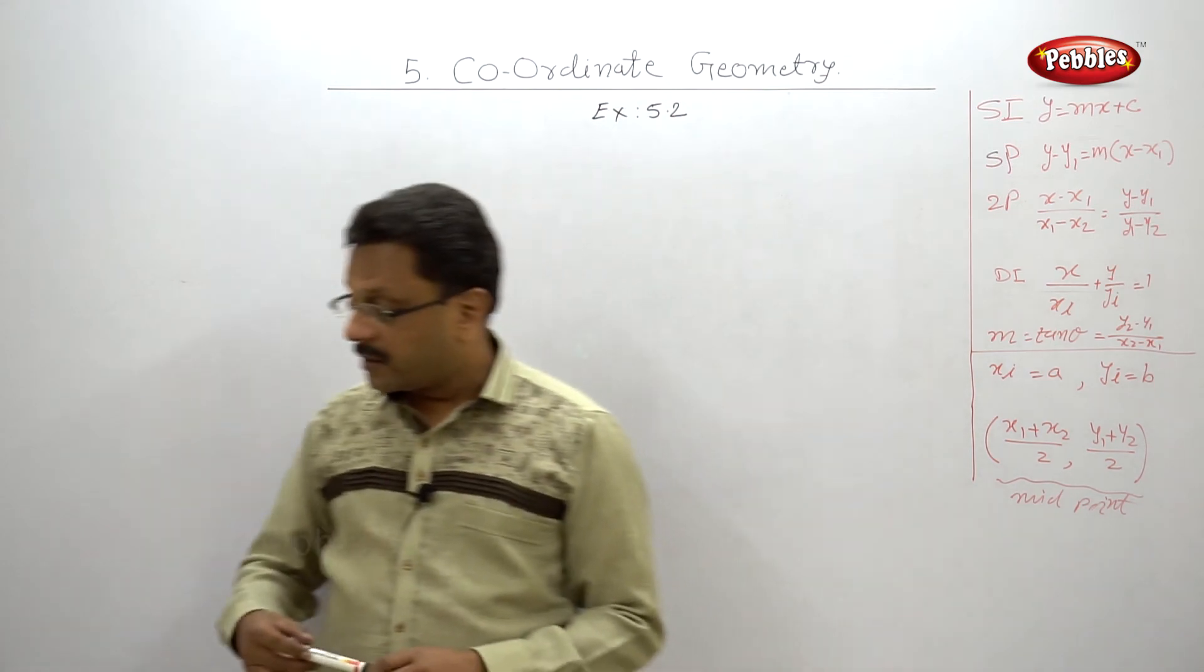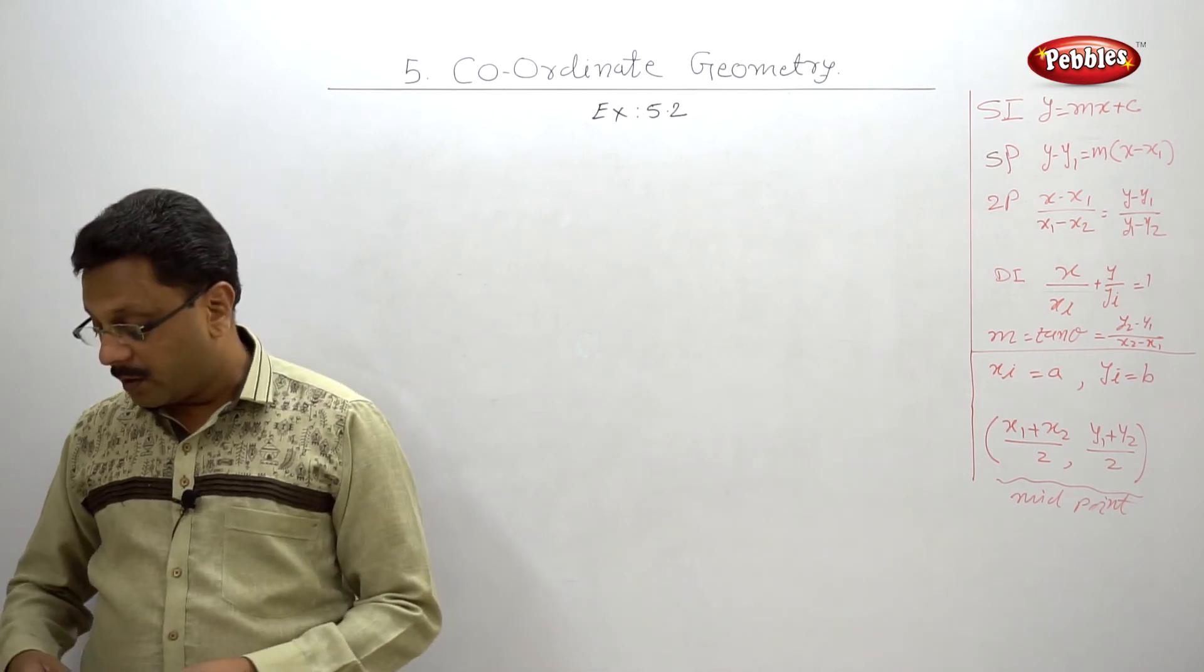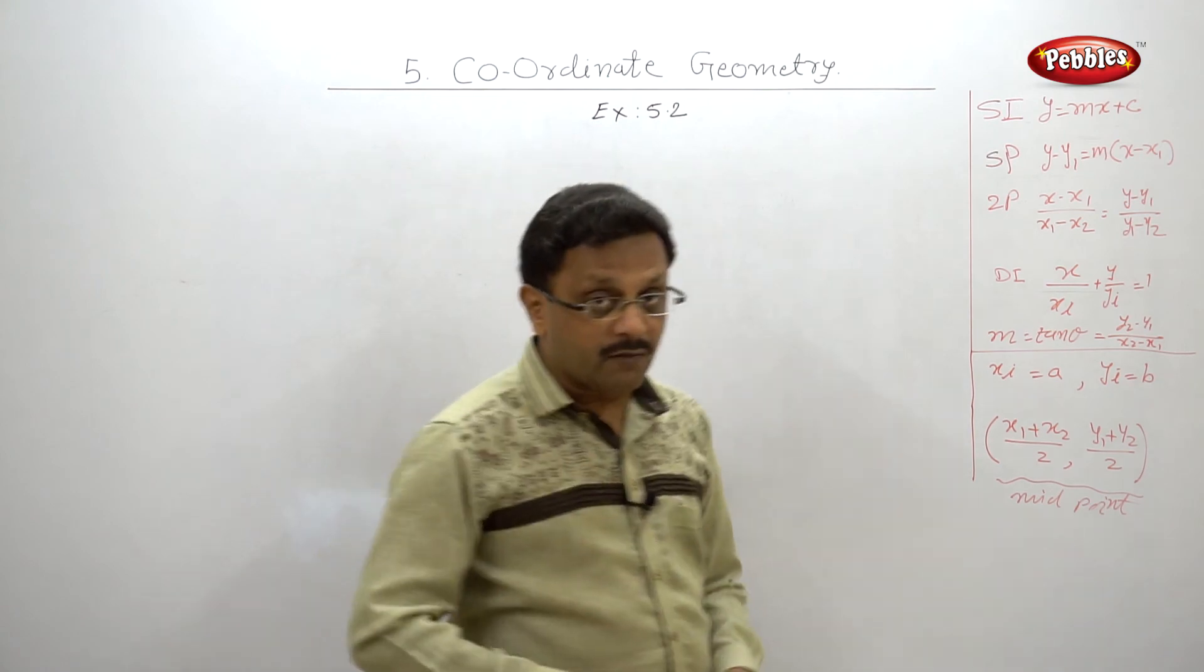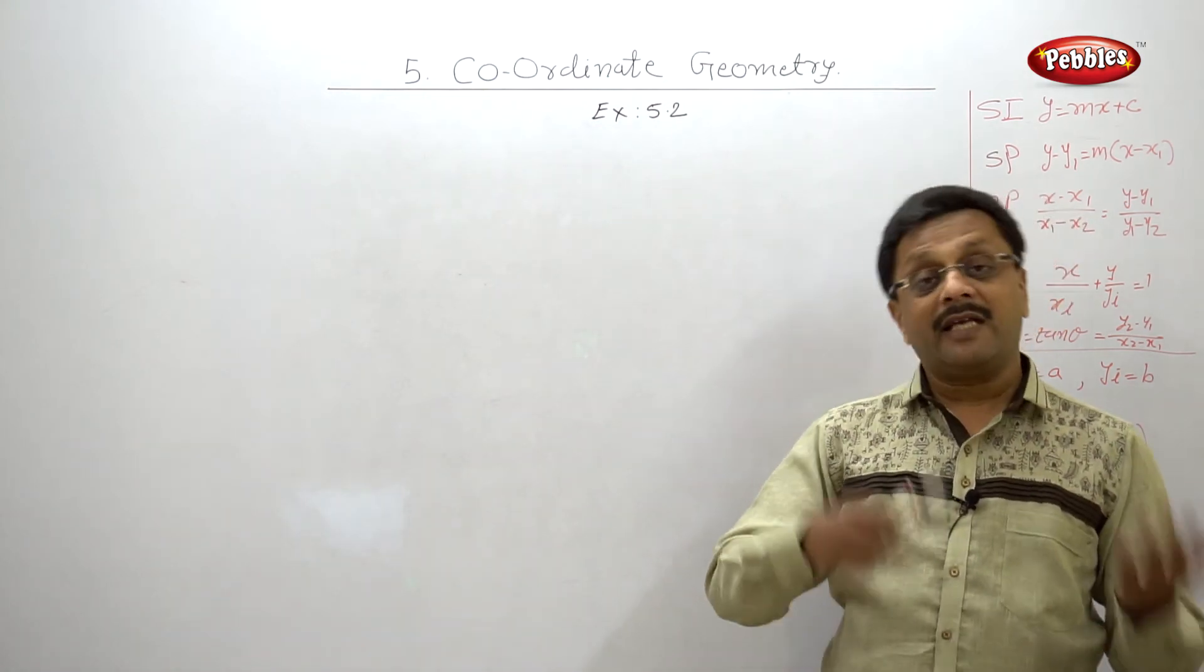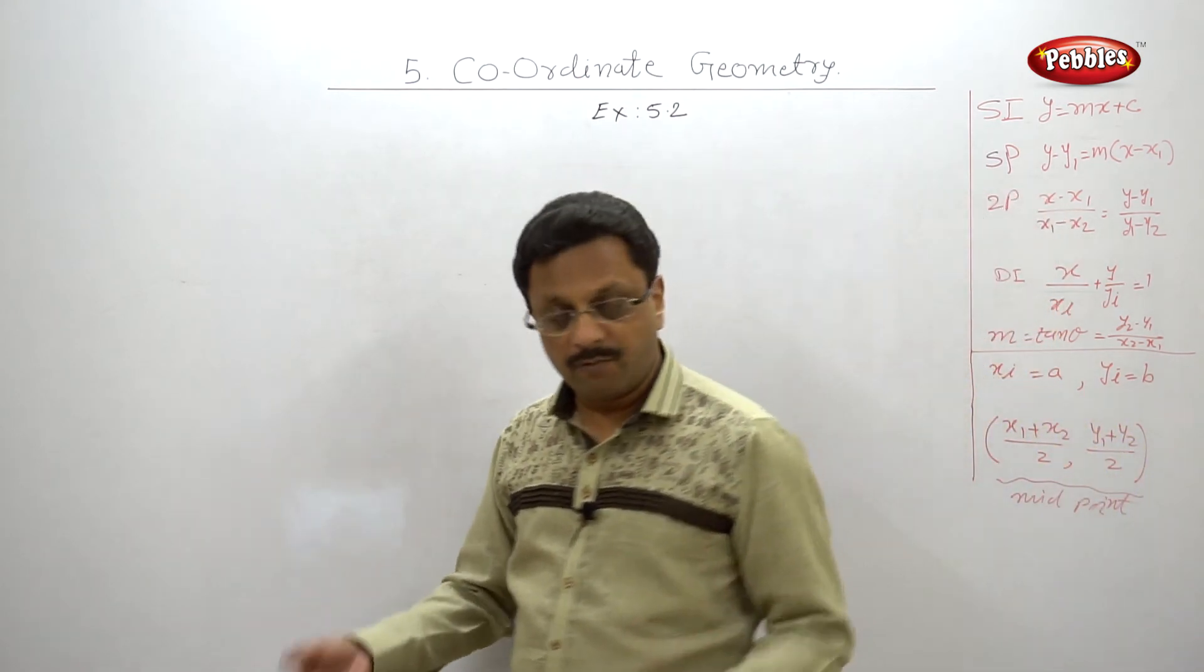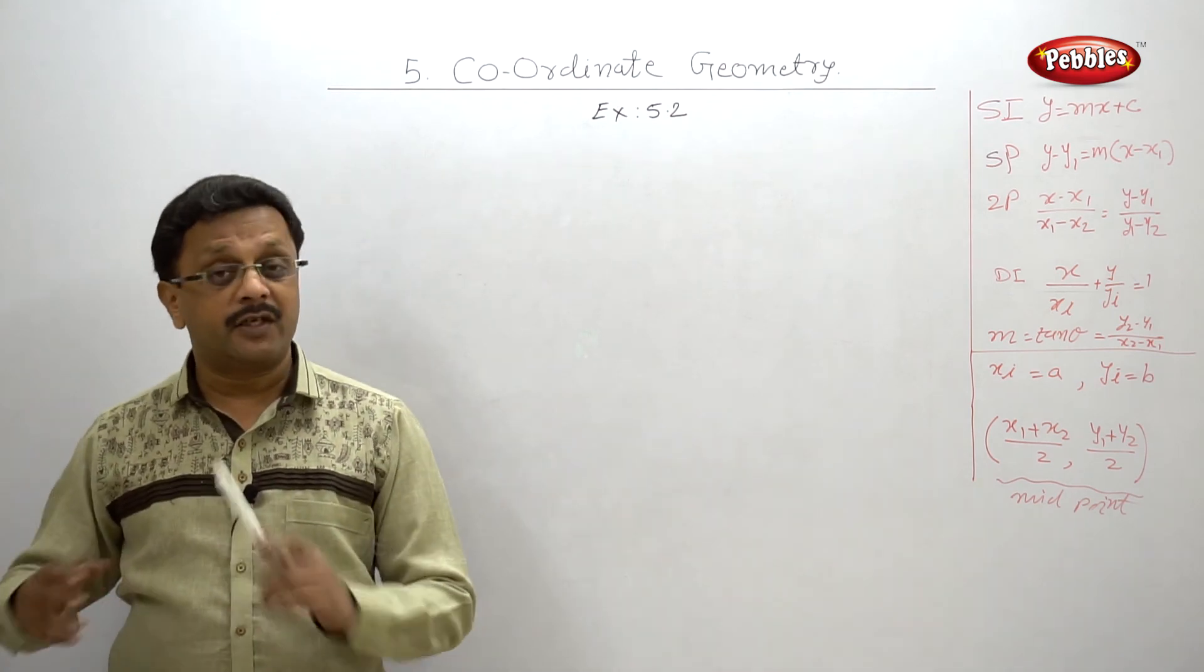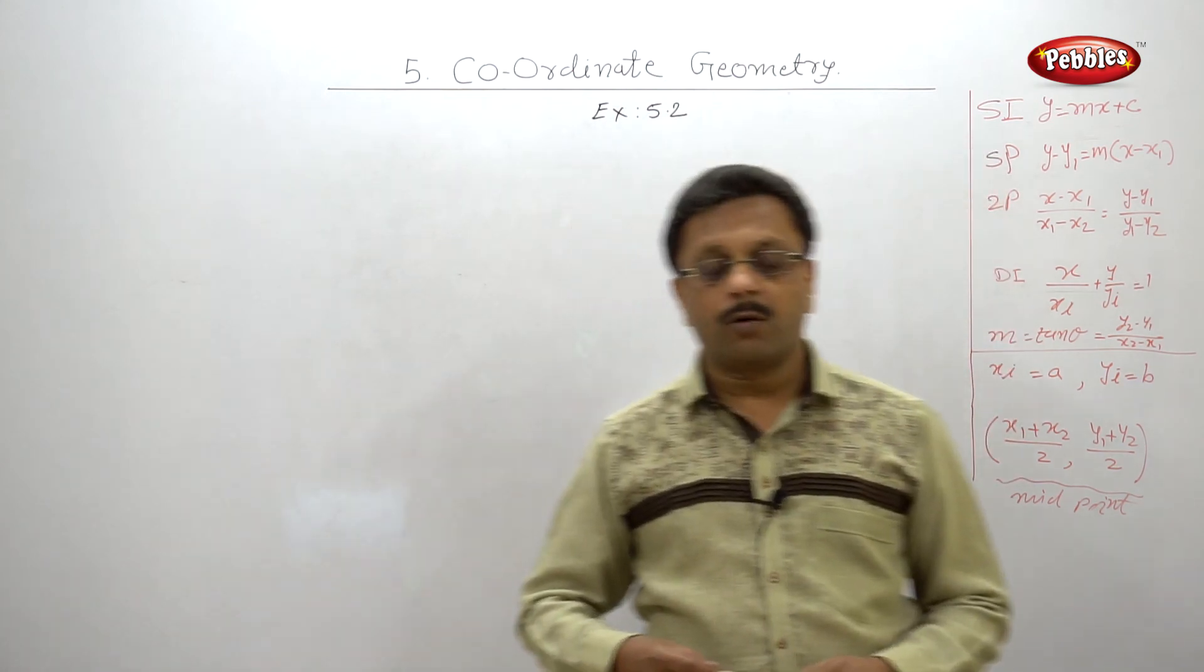Now, that example, the fourth example, appeared in October 14 paper for two marks. That means equation of the line will be given, one point will be given which lies on that line and you have to find out the missing value, that is a variable. Now, this is important. Two marks, very simple example. Don't lose these two marks and this one mark.